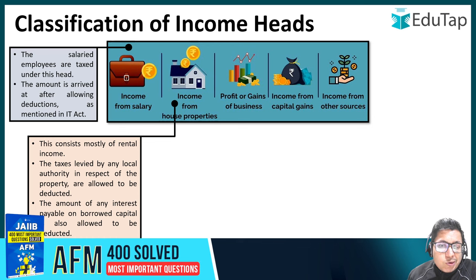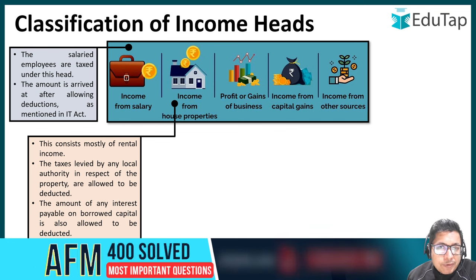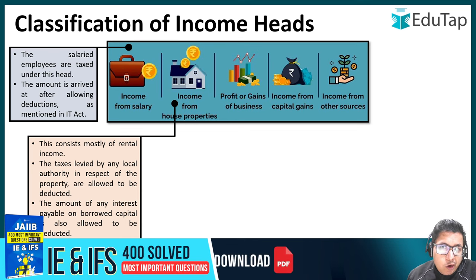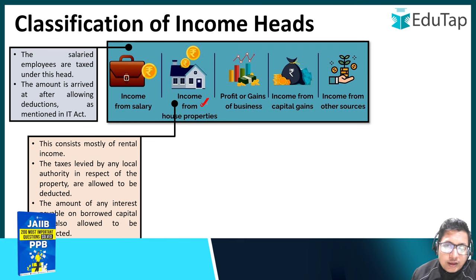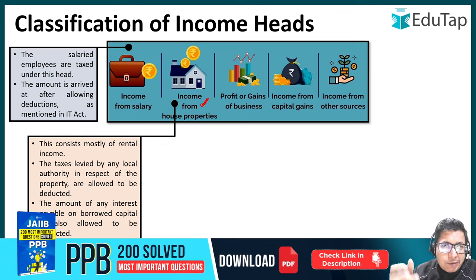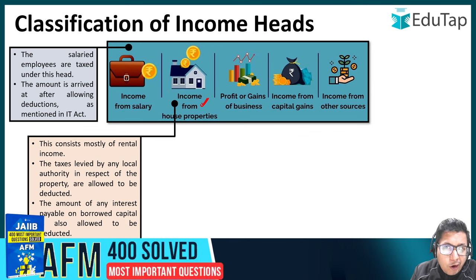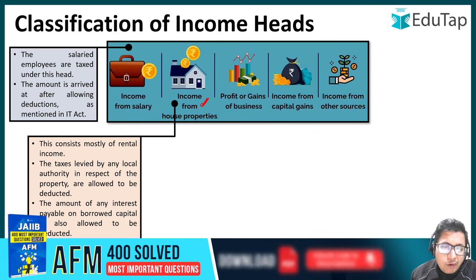Similarly, you can also earn income from house properties. Many people invest in real estate — they own a house, land, or building, and they rent it out to other people. Aur is building ko rent par dene se jo aapko rental income milti hai, yeh aapki income from house properties mein calculate hoti hai. Rent ke alawa bhi aur incomes ho sakti hain — aapne house ko lease pe diya hai, ya land plot ko kiraaye pe chadha diya hai. So any kind of income that you are getting from any real estate is your income from house property.